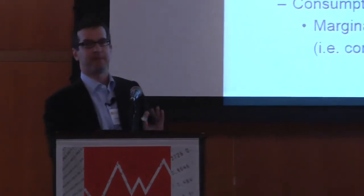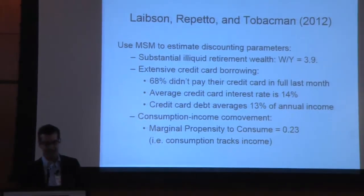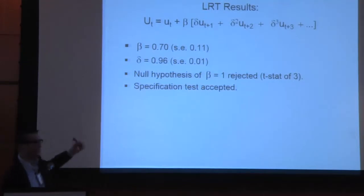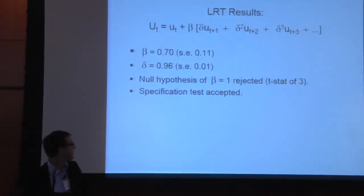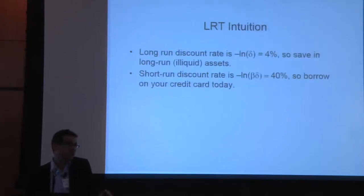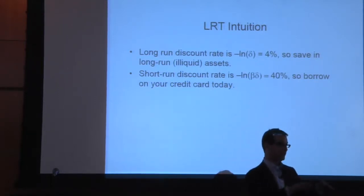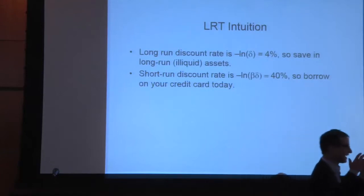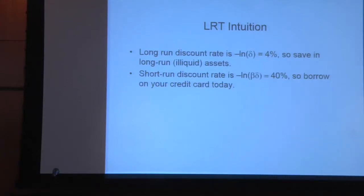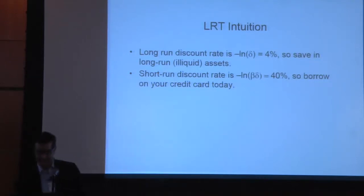We can also use an MSM — method of simulated moments — approach to estimate these parameters. We get a beta estimate of 0.7 and a long-run discount rate of 0.04, or delta of 0.96. The intuition is simple: your short-run discount rate drives all that credit card borrowing and spending of liquid wealth — that's 30%. And yet your long-run discount rate is only 4%, so your long-run behavior is stocking money away into accounts where you hope the money will survive all the way to retirement. As we'll see later, that's often not the case.